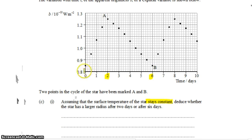We started our measurement at time zero and two days later the apparent brightness was at a maximum. Six days later the apparent brightness was at a minimum. The question is, when would the star be largest?